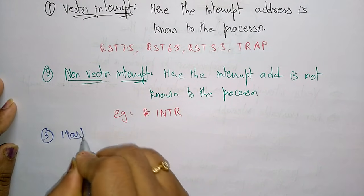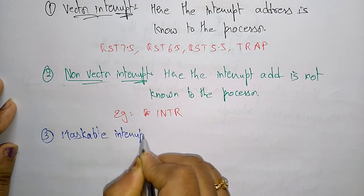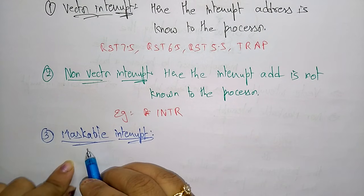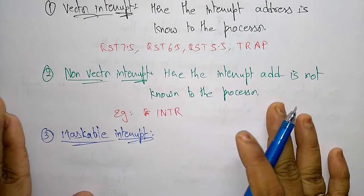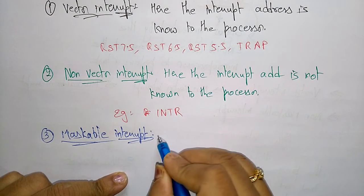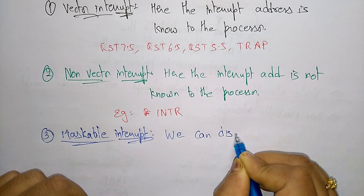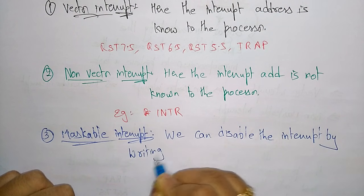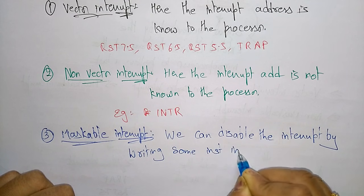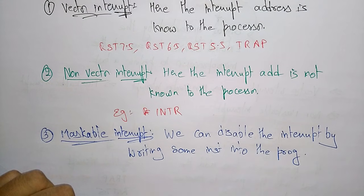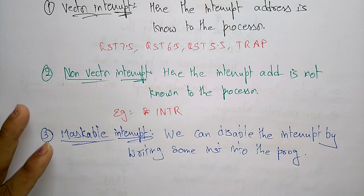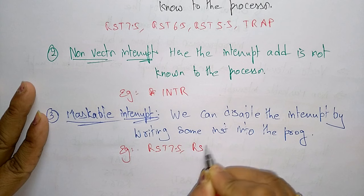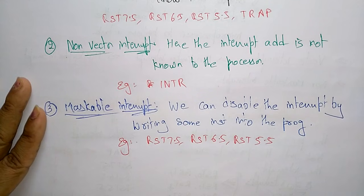A maskable interrupt is one that we can disable. We can disable the interrupt by writing some instructions into the program — that is what masking means. The examples of maskable interrupts are RST 7.5, RST 6.5, and RST 5.5.